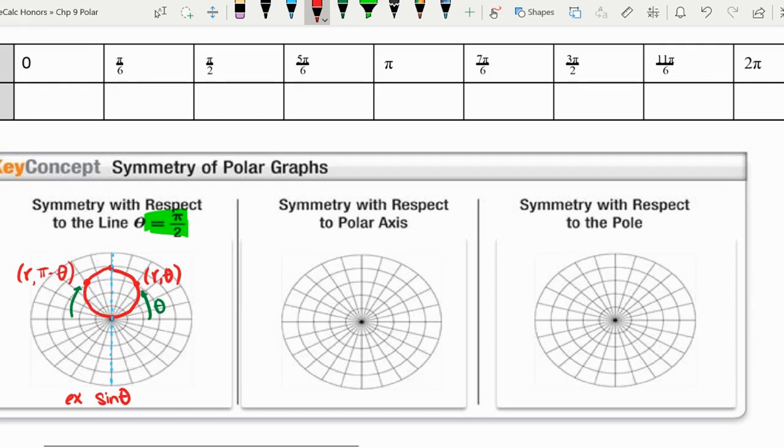That might be an indication that there is theta equals pi over two symmetry. But again, remember, there are lots of ways we could write these points.